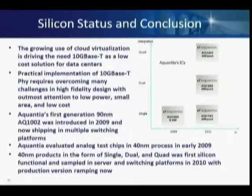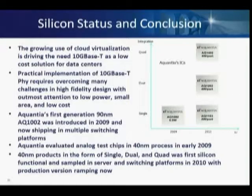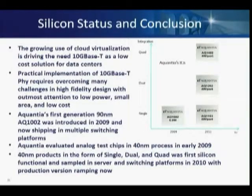Aquantia's 90 nanometer chip came out in production in 2009 and is currently in multiple switch platforms — the first switch shipped from Cisco used the 90 nanometer chip from Aquantia. For the 40 nanometer chip, currently in production, we started in early 2009 doing all the analog front ends and making sure everything was perfect. We did multiple test chips, and gaining confidence in 2010, it was sampled and is currently in production and ramping up very fast. Thank you very much.